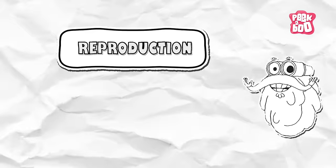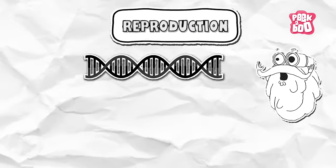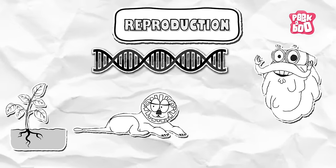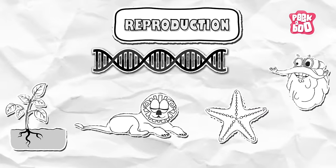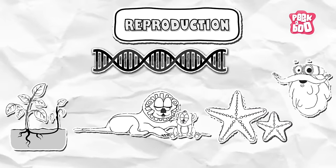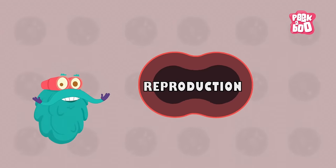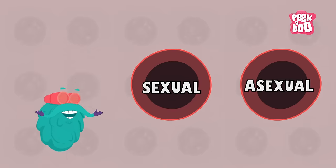Reproduction is a biological process through which plants, animals and different kinds of organisms give birth to newborns. There are two types of reproduction: Sexual and Asexual.